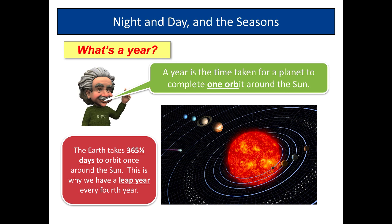If you want to know which year is a leap year, take the year — say it was 2016. If you can divide 2016 exactly by four, it's a leap year. 2016 divides by four 504 times, so 2016 was a leap year with 366 days. The next leap year will be 2020.